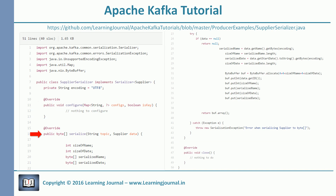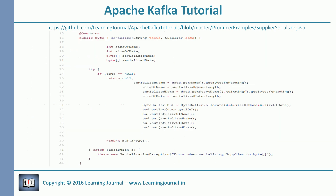The main action is happening in the serialize method. The code is straightforward. If the data is null, we return null because we have nothing to serialize. Otherwise, we convert supplier name and supplier date into UTF-8 bytes. Then we allocate a byte buffer and encode everything into the byte buffer. Since we will need to know the length of the supplier name and supplier date strings at the time of deserialization, we also encode their sizes into the byte buffer. Finally, we return the byte buffer array.